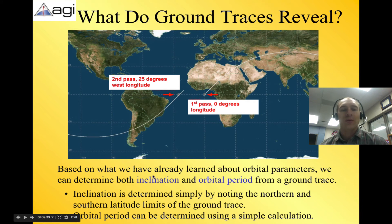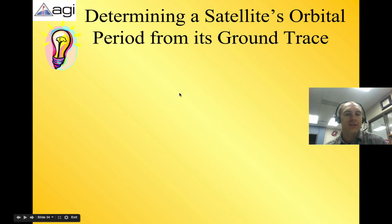What do ground traces reveal? Well, based on what we have already learned about orbital parameters, we can determine both the inclination and the period from a ground trace. So the inclination is a little bit easier. You just look at how high am I here. This is about halfway between 30 and 60, so 45 degree inclination. That one I can tell pretty clearly. But orbital period can also be determined using a simple calculation. So in the first pass, we were at 0 degrees longitude. And then remember the Earth is rotating around this. And so by the time that we get back to our original starting spot, now the Earth has moved underneath us, so now we are here. So then we have to measure this distance. So let's look at how to do that.